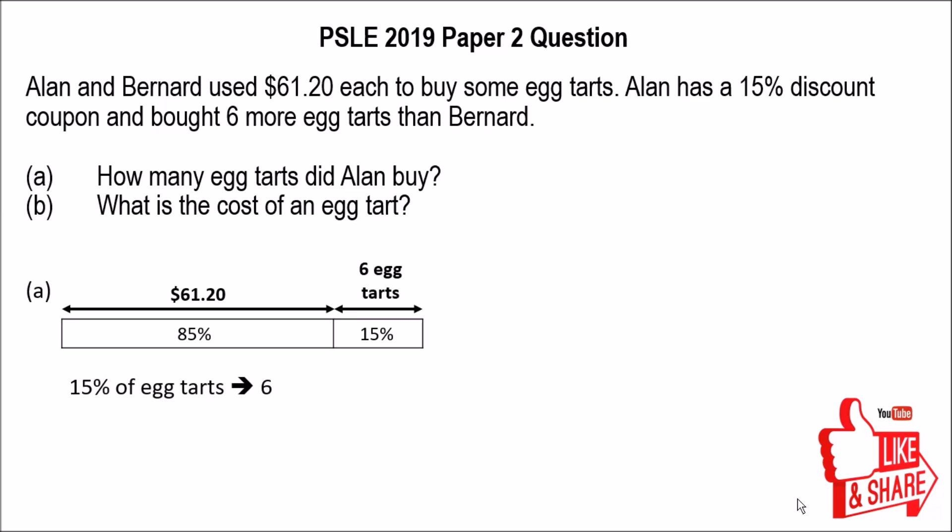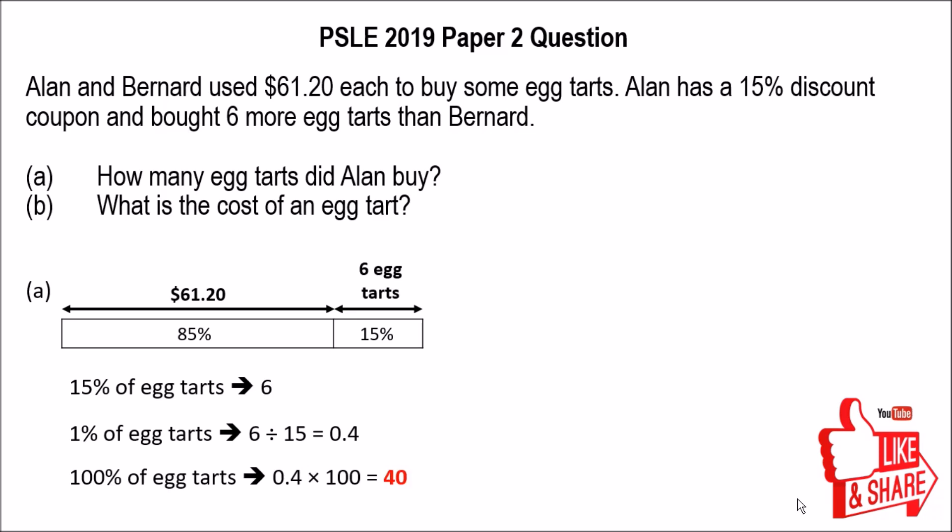So 15% of egg tarts is 6. 1% would be 6 divided by 15, which equals 0.4. So 100% of the egg tarts — meaning the total number of egg tarts Alan actually bought — is 0.4 multiplied by 100, which is 40. So the answer for Part A is 40.